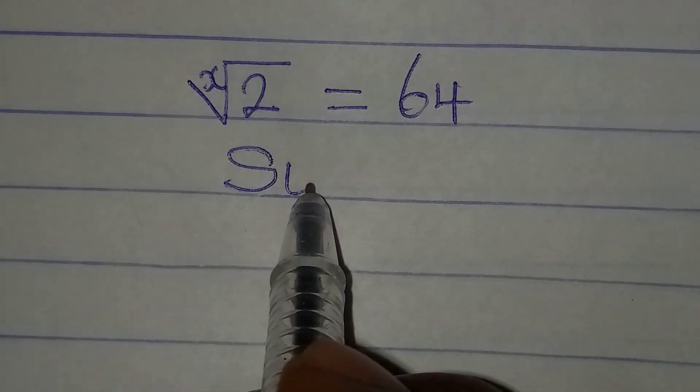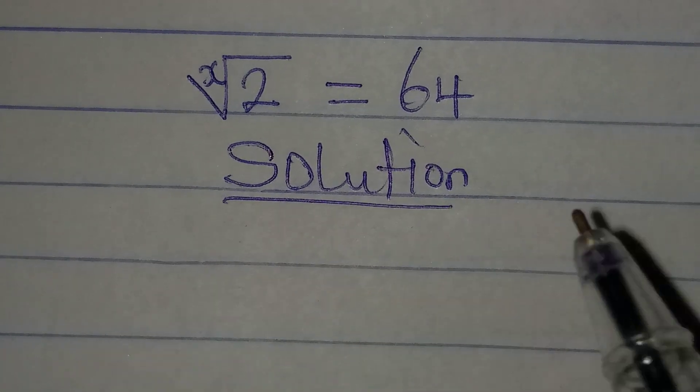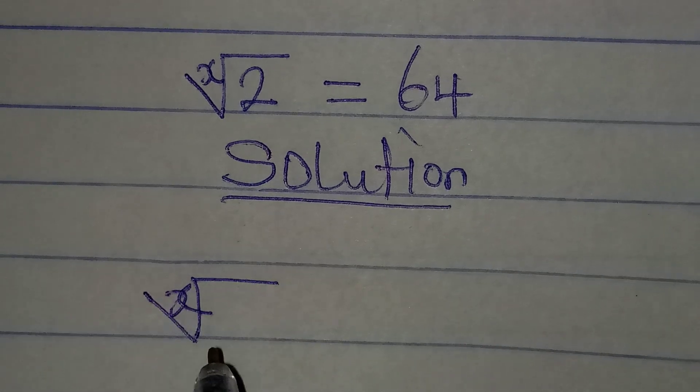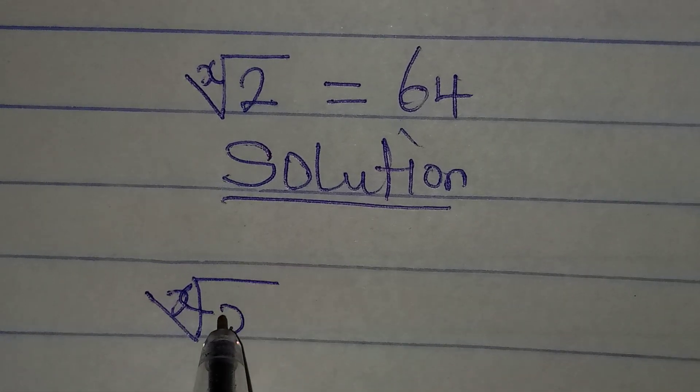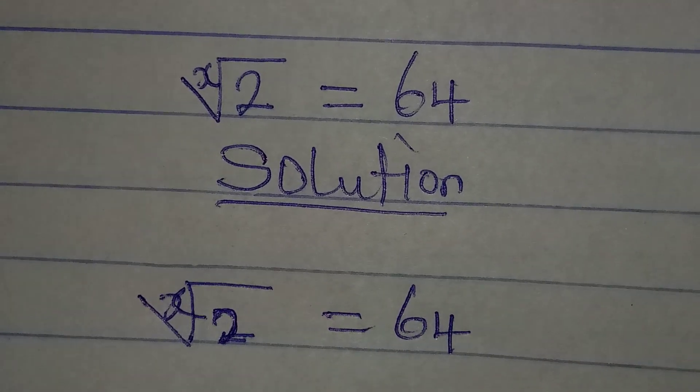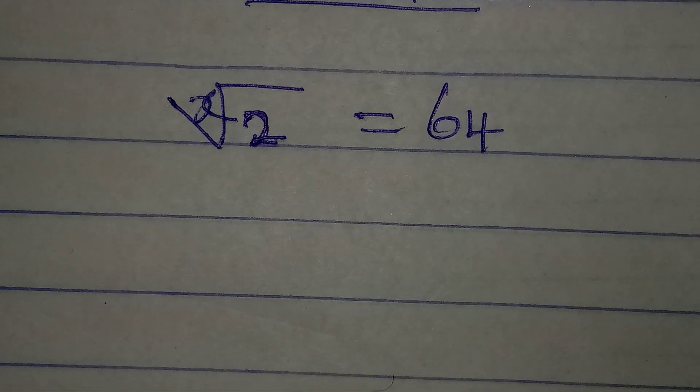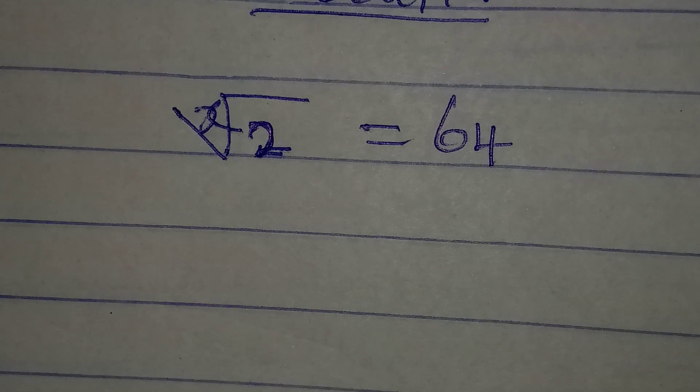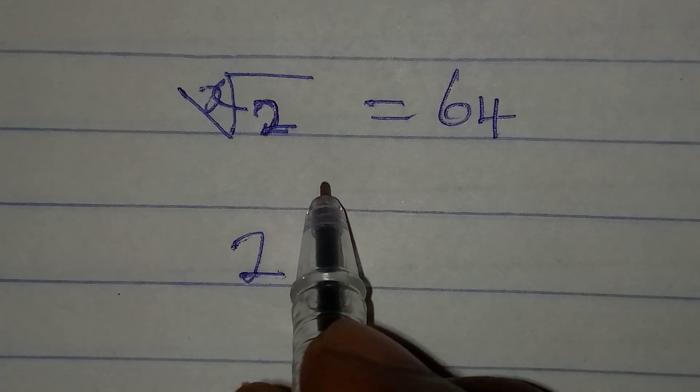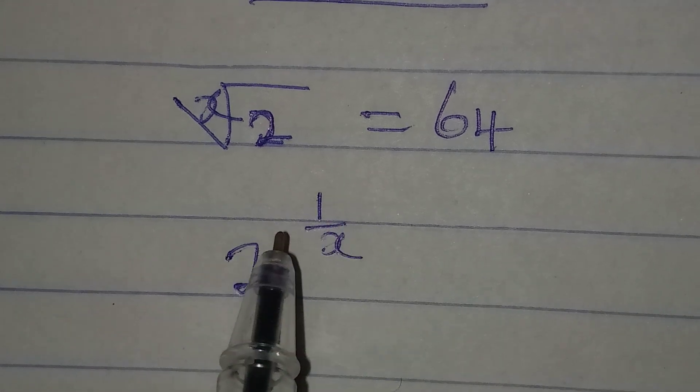Hello everyone, let's provide the solution to this problem very quickly. We have x root of 2 to be equal to 64, and the question is saying that we should find the value of x. By the way, this is the same as 2 to the power of 1 over x, because this will still give us the x root of 2.